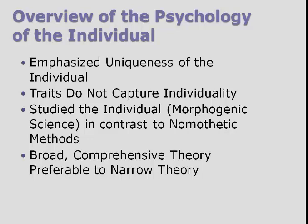Allport really focused on the psychology of the individual, focusing primarily on the uniqueness of each person. He would say your personality is going to look very different from the next person's, and that's okay. We shouldn't try to come up with a universal list of personality traits. Rather, we need to sit down across from a human being one-on-one and study them. This is called morphogenic science — he had a sample size of one, sitting down to deeply understand that person's personality, much like a case study.